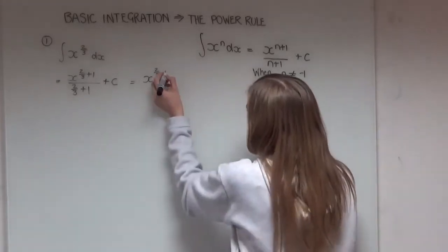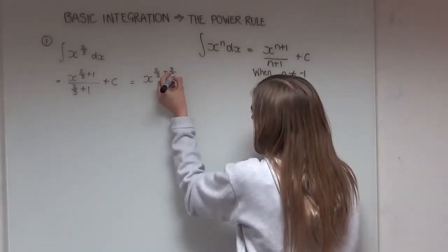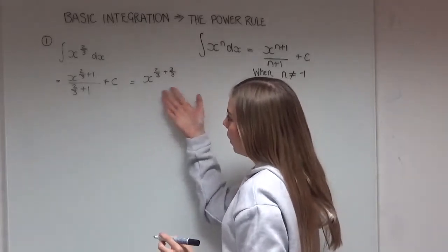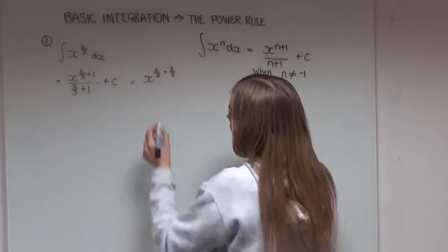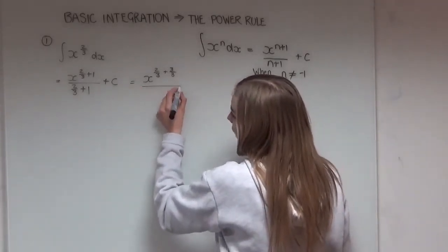So if you're adding 1 to it I'll write it as 3 thirds because that's the same as 1, and it just helps us to see more clearly how that will be written when we tidy it up.